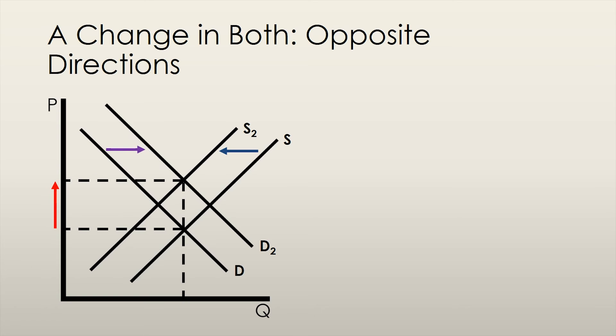However, we don't know what happens to the equilibrium quantity just yet. Try to visualize this in your head, or draw it out if you need. If demand increases more than supply decreases, then the equilibrium quantity would increase. On the other hand, if supply decreases more than demand increases, the equilibrium quantity would decrease. Again, either way, the price would still increase.